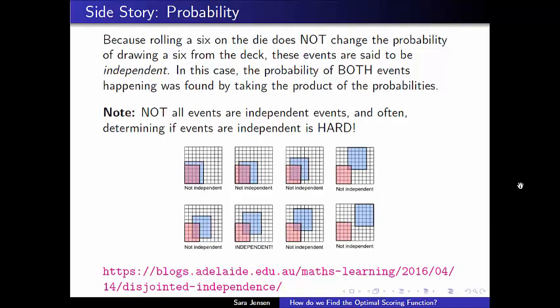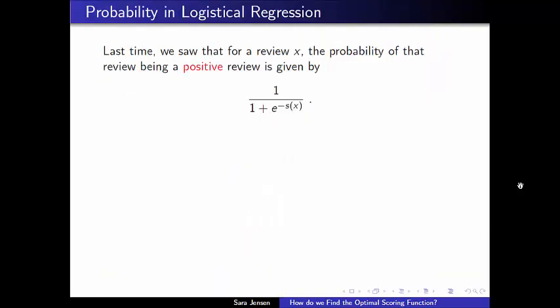However, the example that I gave you in the previous set of slides really and truly is an example of independent events. And more importantly, we need to be aware of the fact that independent events are difficult. It kind of serves as a cautionary tale, but we are going to assume that we have independent events when we're working with our logistical regression model.